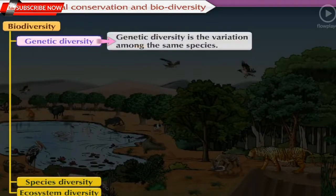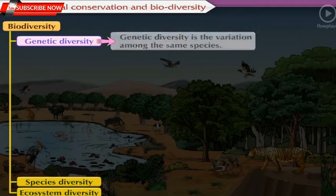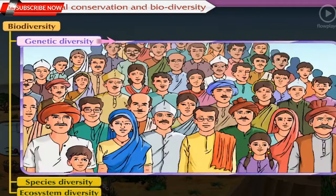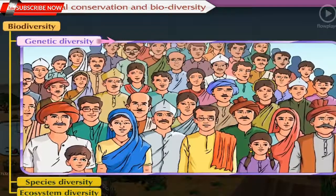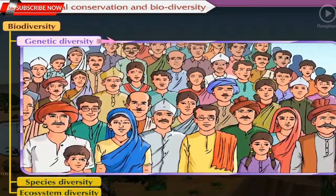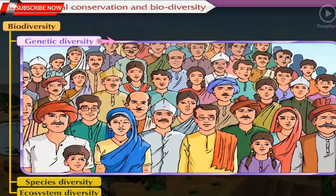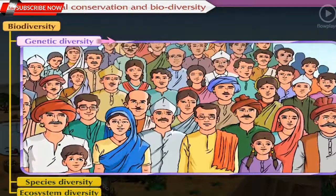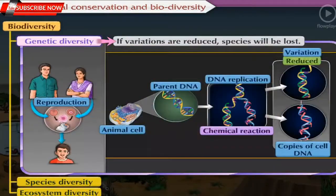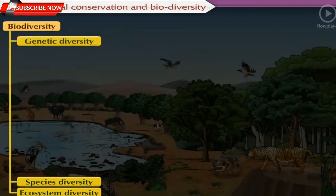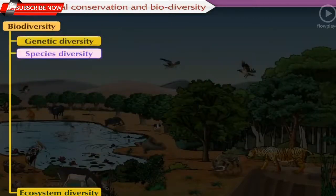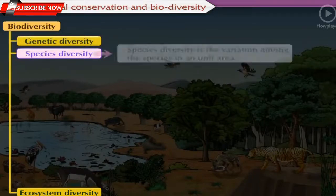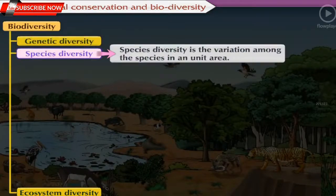Genetic diversity is the variation among the same species. For example, the variation seen in human beings. The species involved in reproduction have genetic diversity, and if these variations are reduced, then gradually the species will be lost.